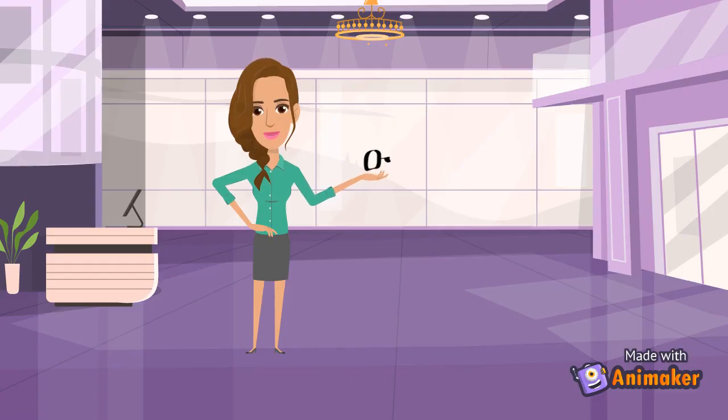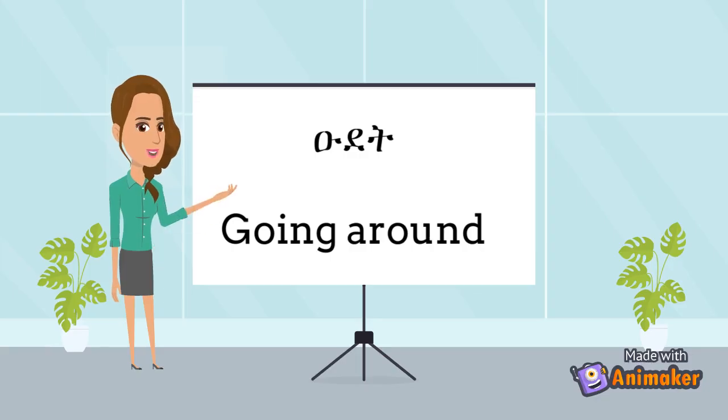Our second letter is R. One word that has the letter R is RUDE. This means going around.